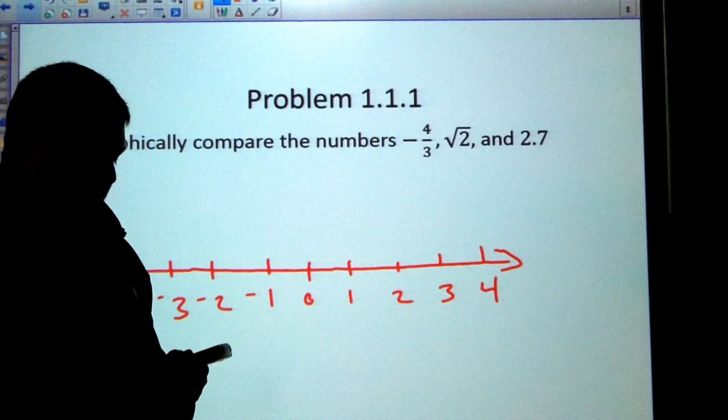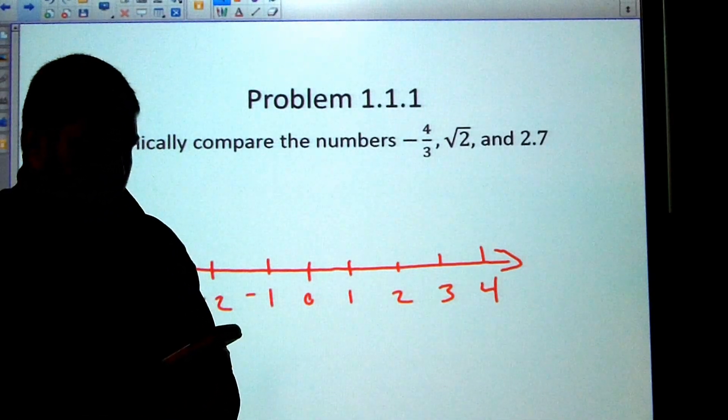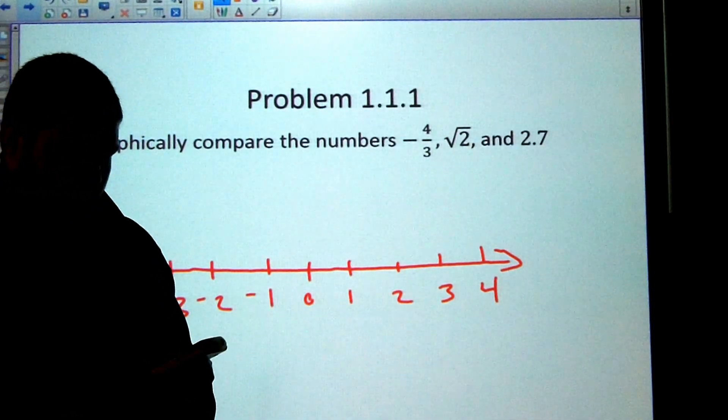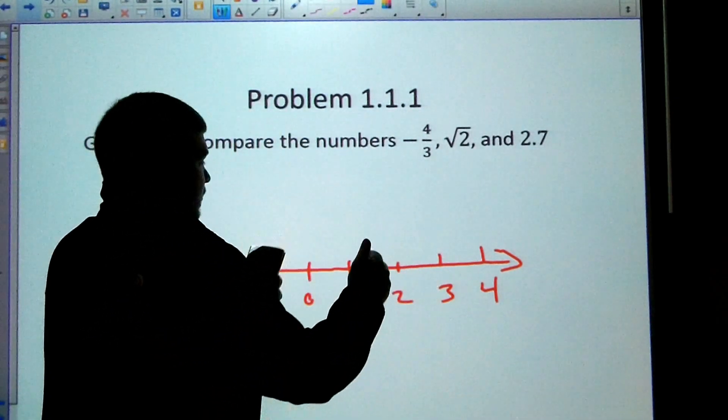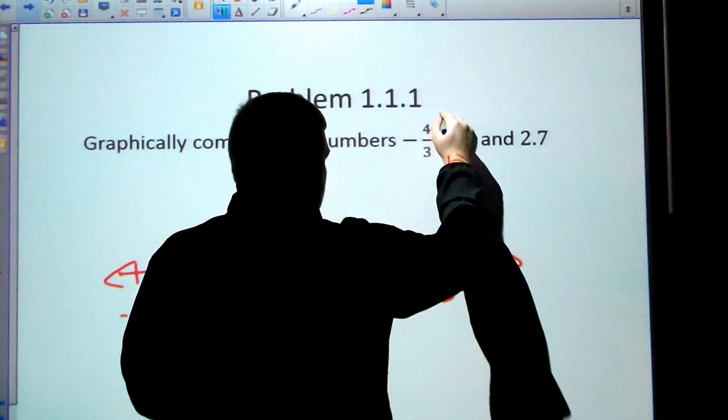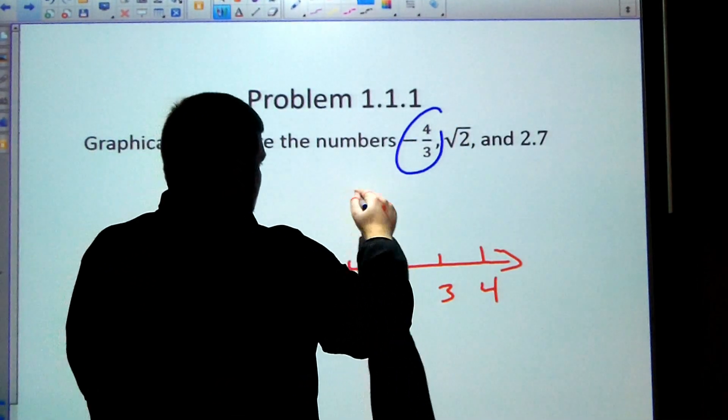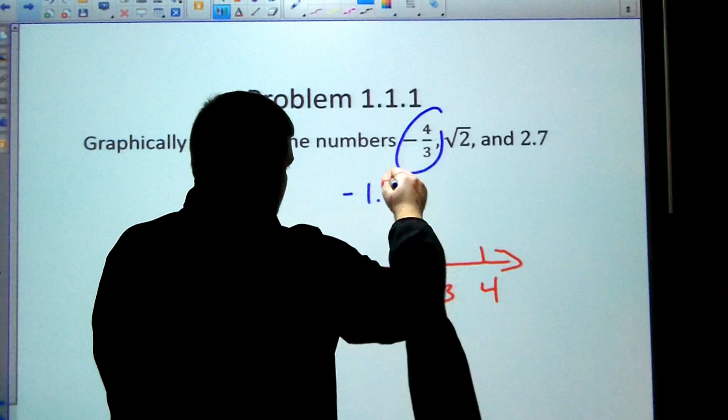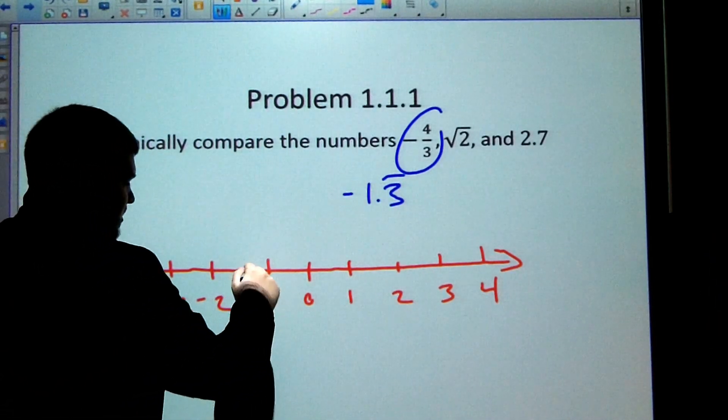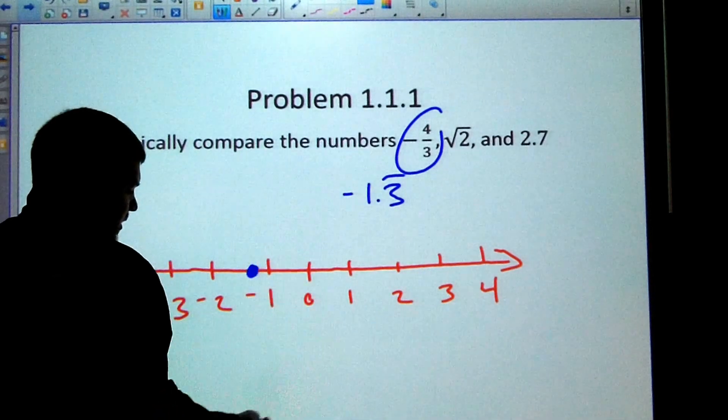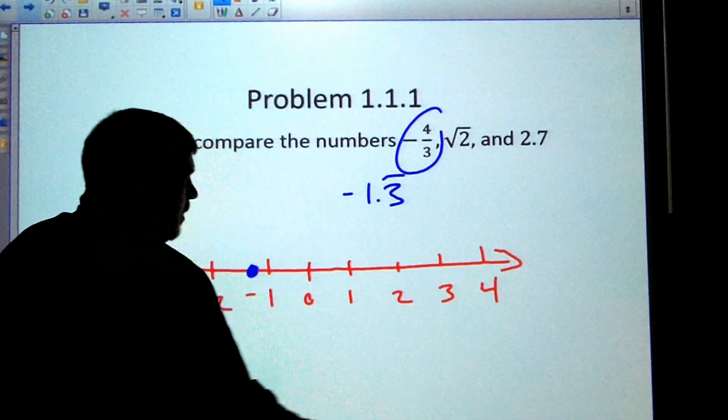So using my calculator, I'm just typing in each one exactly the way it looks. And so negative four thirds is about negative 1.3 repeating. So negative 1.3 repeating is somewhere about right here.